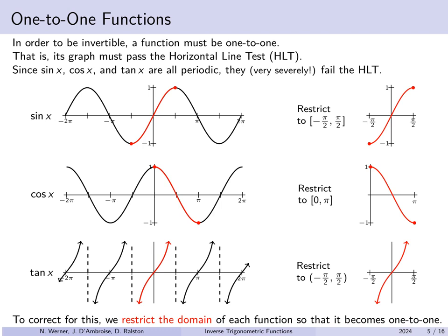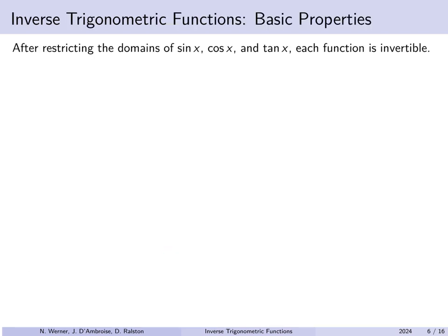The idea is to pass the horizontal line test while not losing any possible y values. We have the same range from minus 1 to 1 for sine and cosine respectively, and all real numbers for tangent, while now passing the horizontal line test. Now that these pass the horizontal line test, they're one-to-one, and we can invert them. After restricting these domains, we define the inverses to be arc sine, arc cos, and arc tangent respectively.